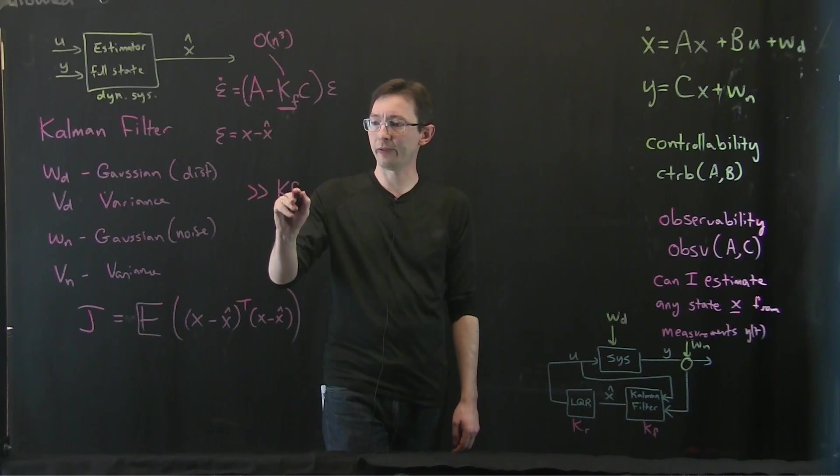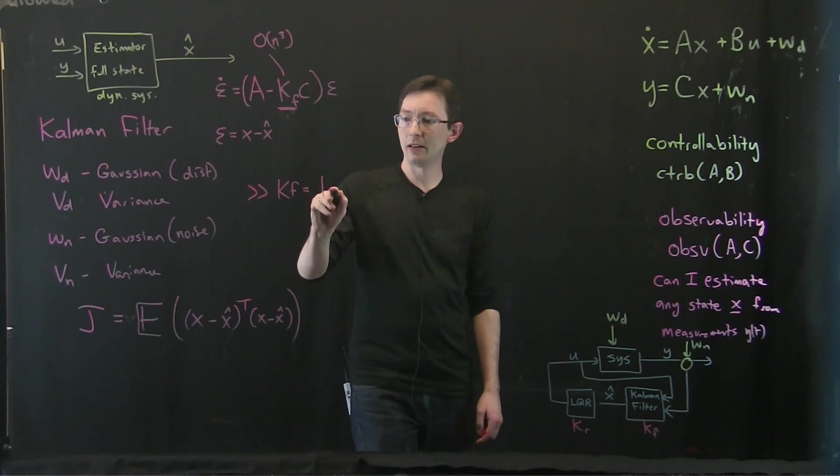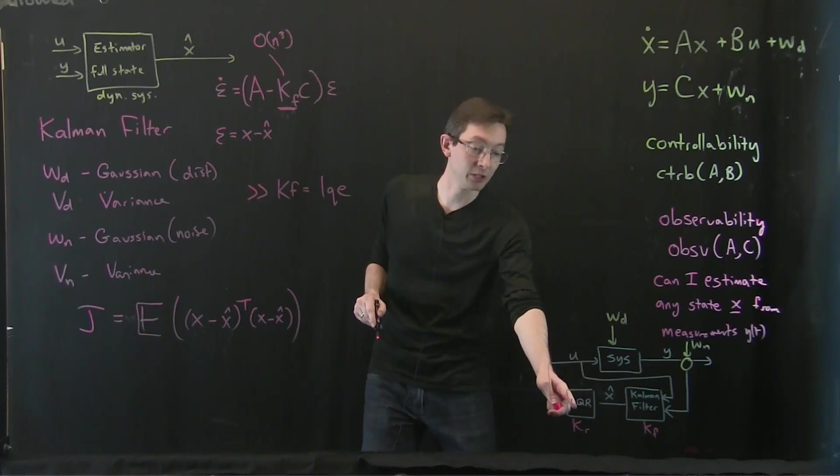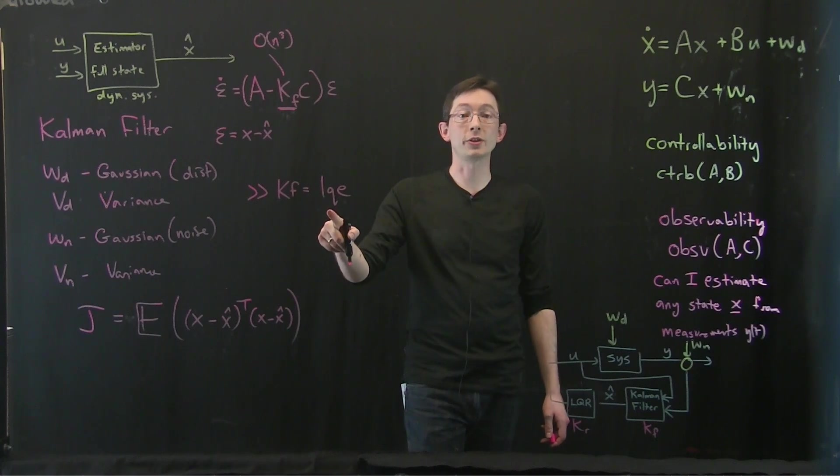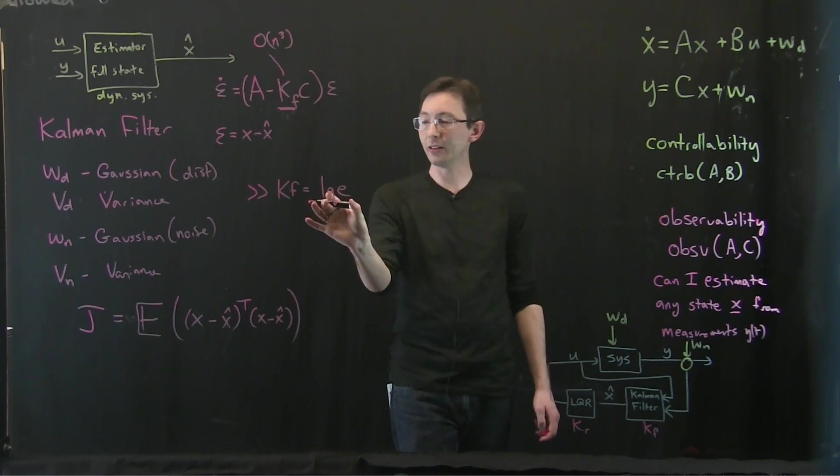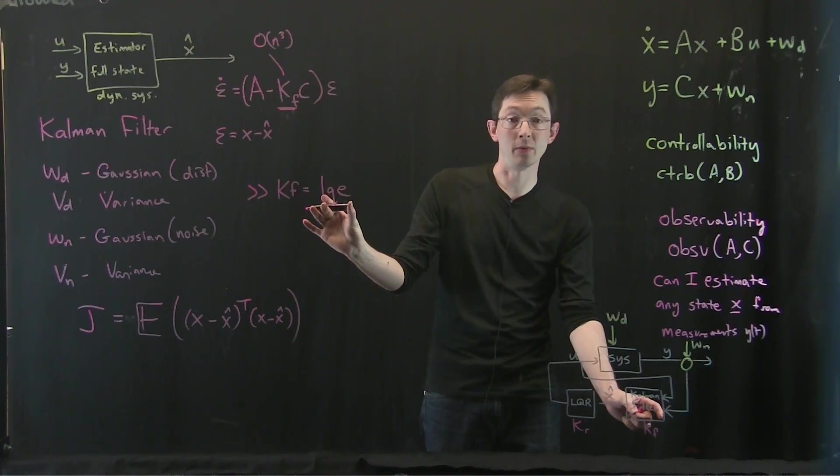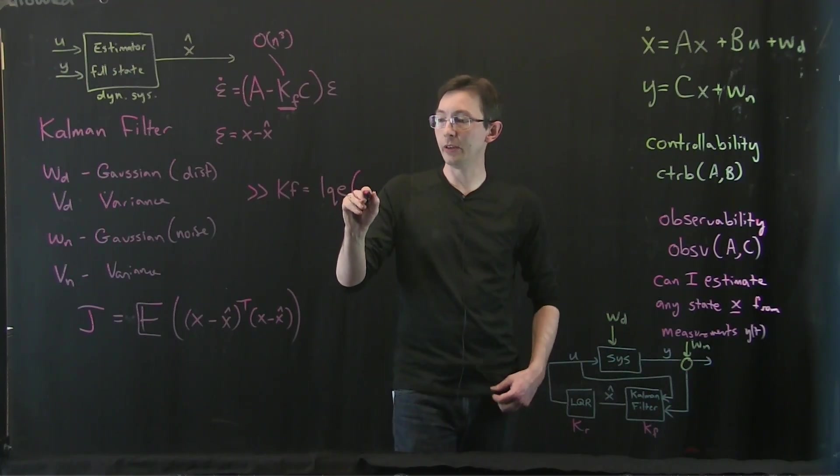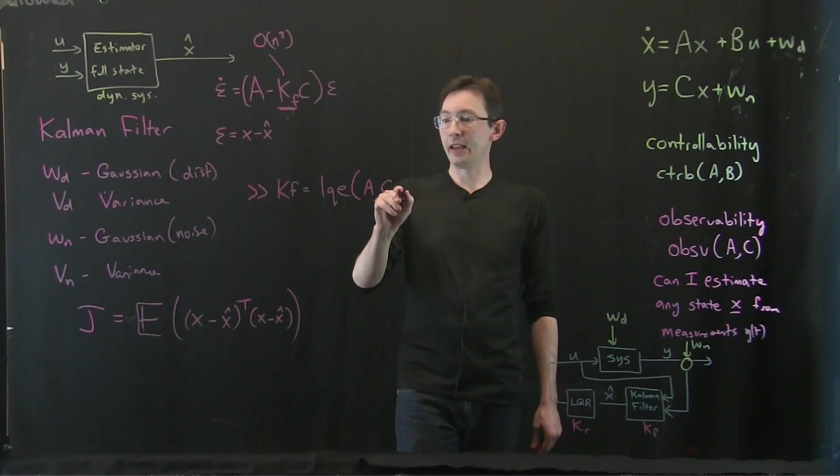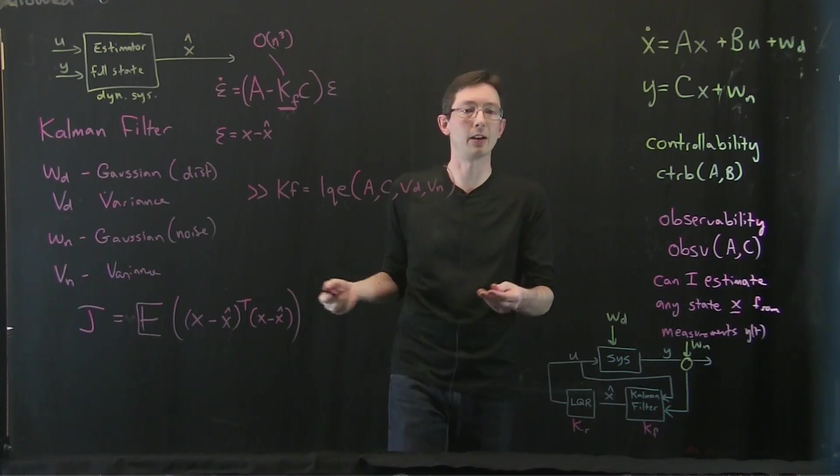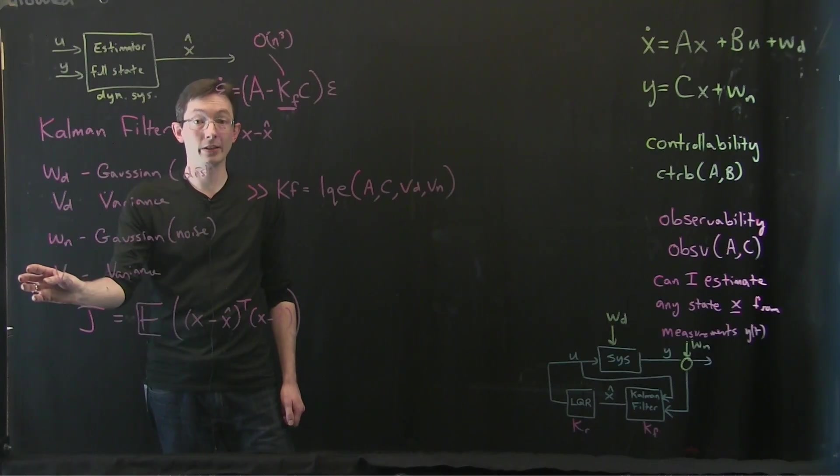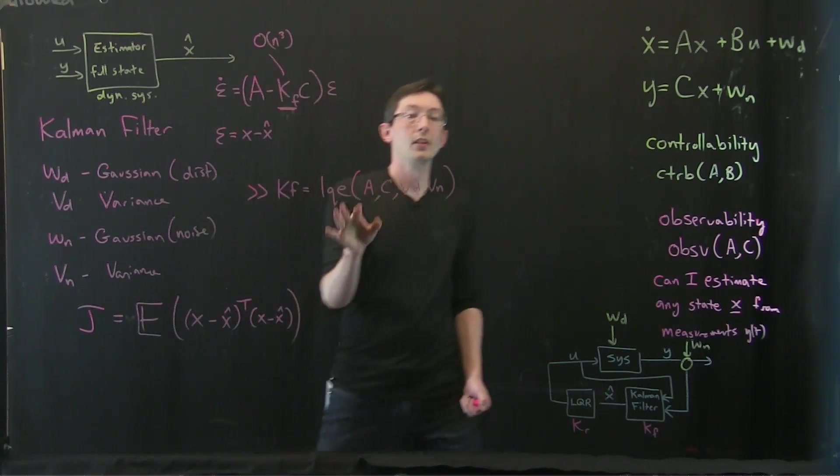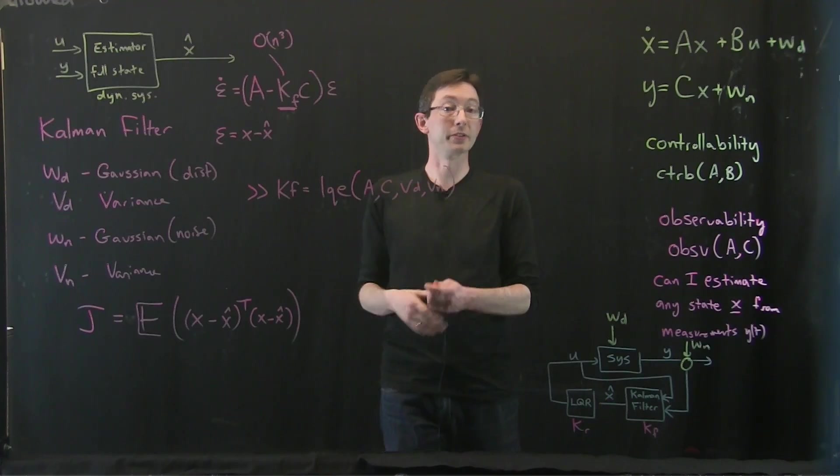I think it's something like Kf equals LQE. So now remember, we use LQR for the quadratic regulator, full state control. This is a linear quadratic estimator. So LQE is basically synonymous with Kalman filter. I do LQE of A, C, and then VD and then VN. I forget what the order is, but you can look at the help file. But basically, these now serve the role of the Q and the R matrices in LQR for this Kalman filter design.